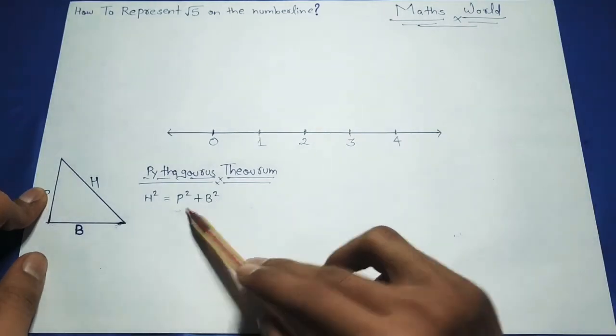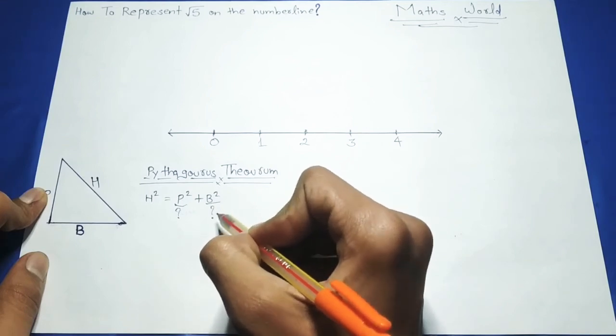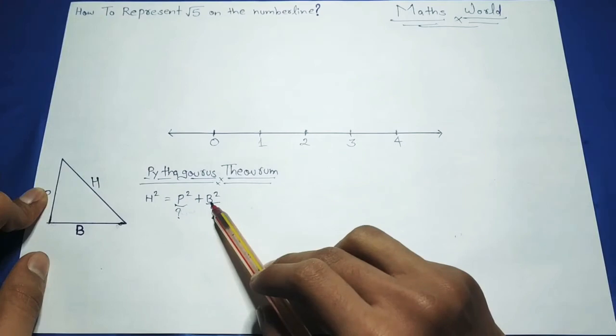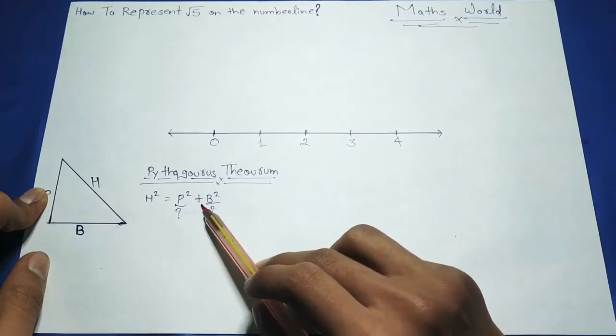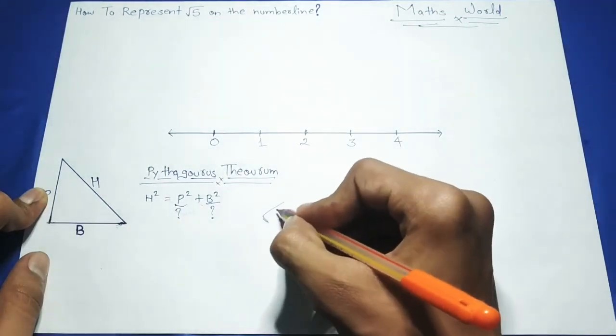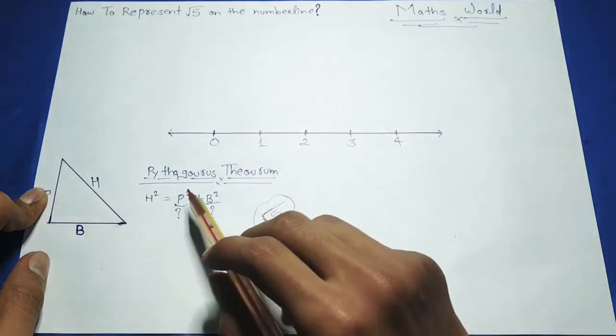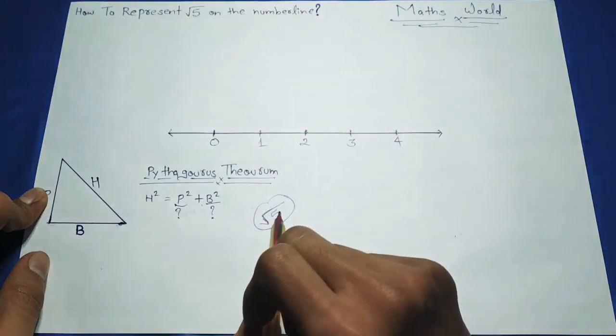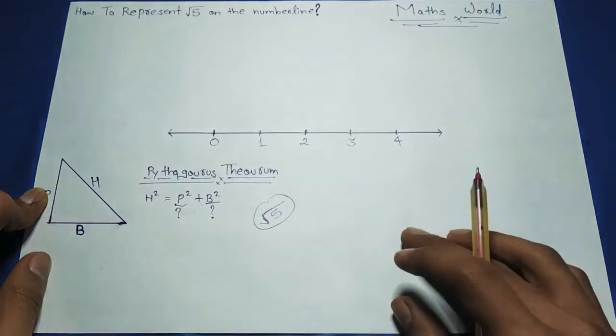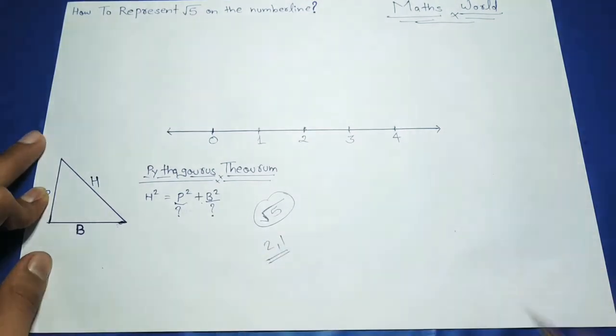We need to find first the P value and then the B value. We need to find such values P and B which are squared and then added to give H value as square root 5. If we find numbers like 2 and 1, let's check it.